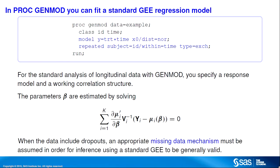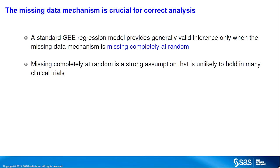Because the data include dropouts, you must assume an appropriate missing data mechanism in order for the standard GEE model to provide valid inference. The missing data mechanism describes why a response is missing and is crucial for correct analysis. The standard GEE method provides generally valid inference only when the mechanism is missing completely at random. A missing completely at random assumption means that the missingness is independent of the observed and unobserved responses conditional on the covariates. Missing completely at random is a strong assumption and is unlikely to hold in many clinical trials.